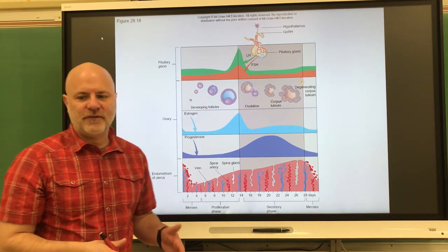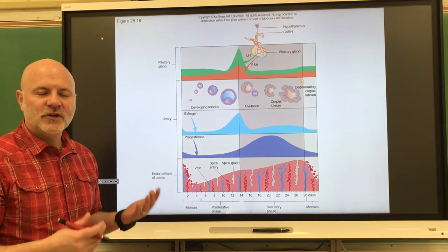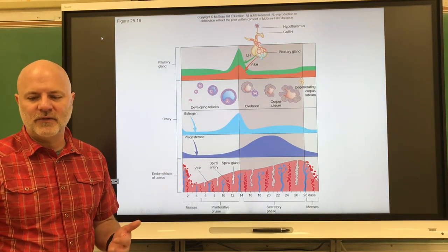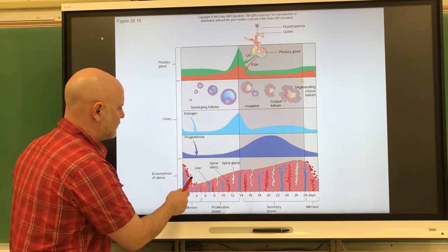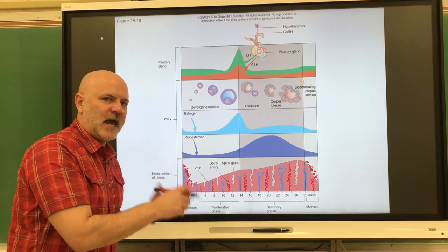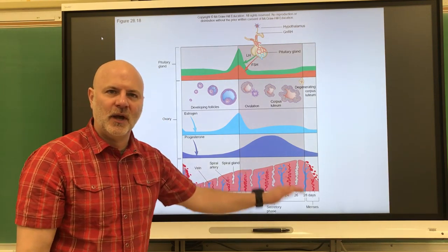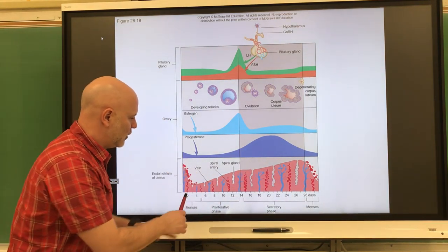This is the menstrual phase, days one through five, where menstruation occurs. This is a shedding of the endometrium of the uterus. Here estrogen and progesterone levels are at their lowest, and these levels cause the buildup of the endometrium. So if they're at their lowest levels now, you shed the endometrium.